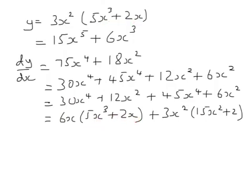So let's take this one step at a time. 5x cubed plus 2x is there, and that's multiplied by 6x. Now, if you differentiate 3x squared, that's 6x. So 3x squared differentiates to 6x — and that's just the same. And then look — 3x squared has stayed the same. And yes, differentiate 5x cubed plus 2x, you get 15x squared plus 2.